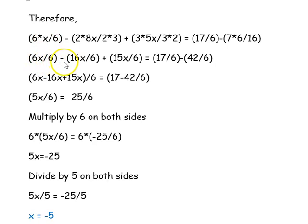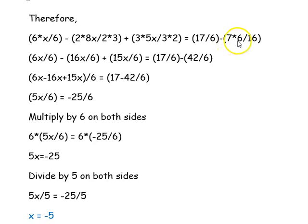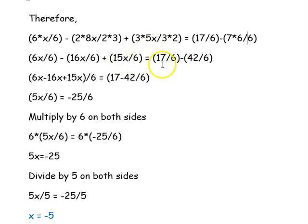We rewrite the equation with denominator 6: 6x divided by 6 minus 2 times 8x divided by 6 plus 3 times 5x divided by 6, equal to 17 divided by 6 minus 7 times 6 divided by 6. So 2 times 8x gives 16x divided by 6, and 3 times 5x gives 15x divided by 6, equal to 17 divided by 6 minus 42 divided by 6.